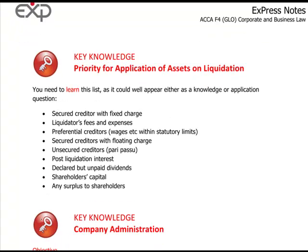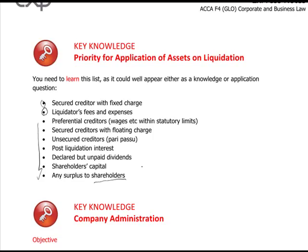Priority for application of assets on liquidation — you do need to learn this list as it could appear as a knowledge or application question. Secured creditors go first and get their money. From the pot left over, the liquidator's fees are paid second, and so on down the list. Preference shareholders rank ahead of ordinary shareholders, who are last in the queue and often have slim chances of receiving anything.